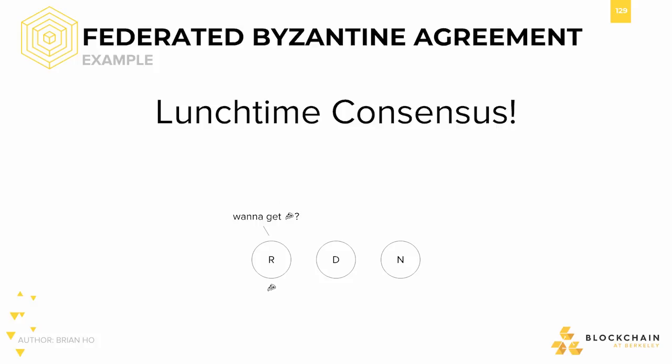Rusty suggests pizza, his favorite dish, making the suggestion to Derek and myself. However, we know of a secret deal for $1 burgers today. Rusty, also a fan of burgers and acknowledging the value of the discount, cedes to our preference and decides on burgers as well. The three of us celebrate for coming to consensus.